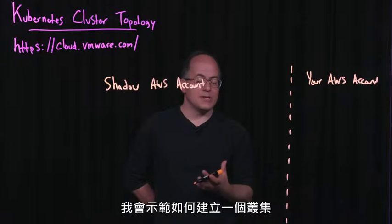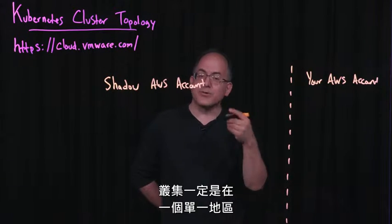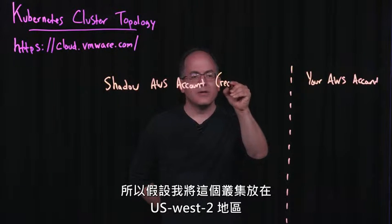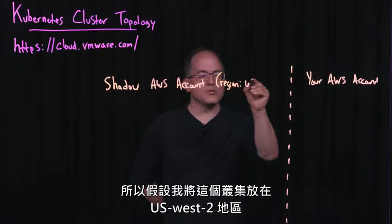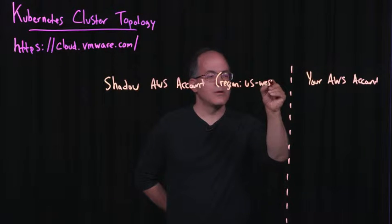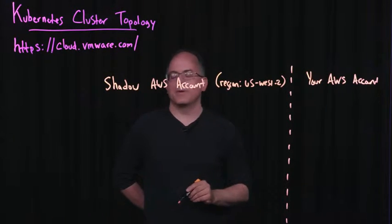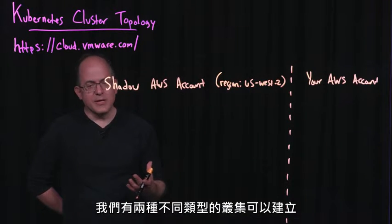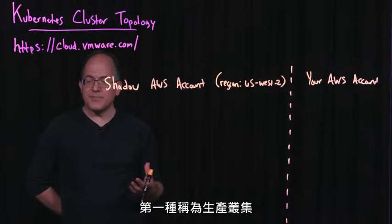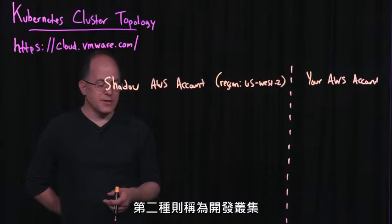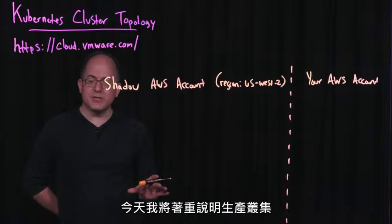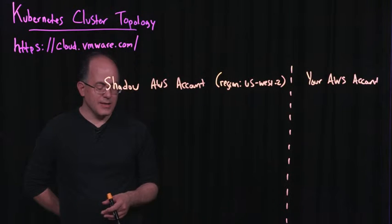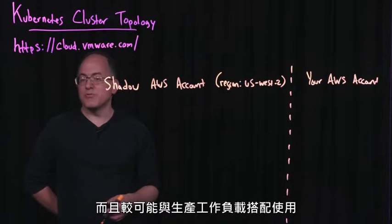I'll show you how we create a single cluster, and we're going to put it in one region. A cluster is always in a single region — we'll put it in the US West 2 region. Every time we create a cluster, there are two different types we could create: the first one is called a production cluster, and the second one is called the development cluster. Today I'm going to focus on production clusters. They are more scalable, more robust, and more likely to be used for production workloads.